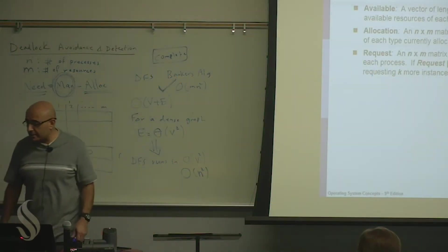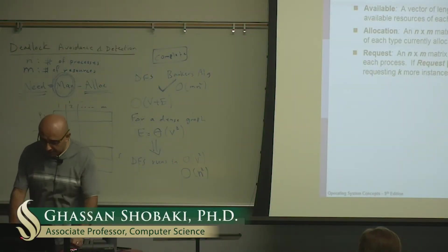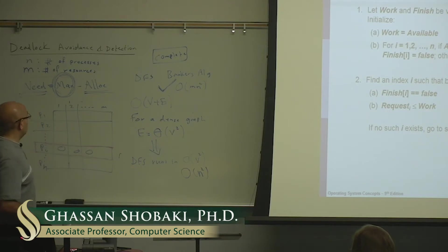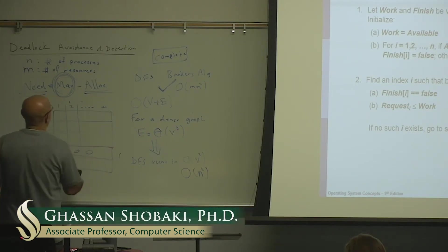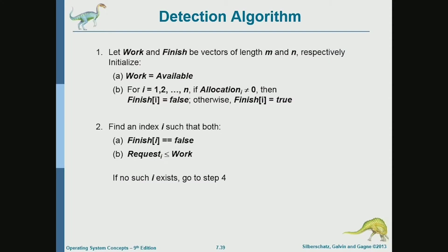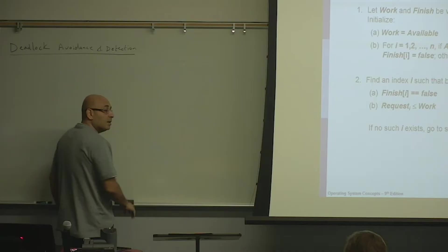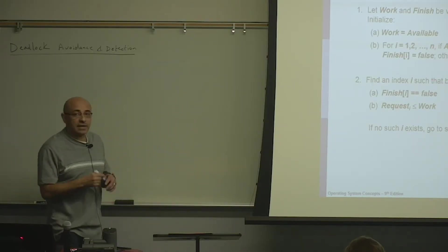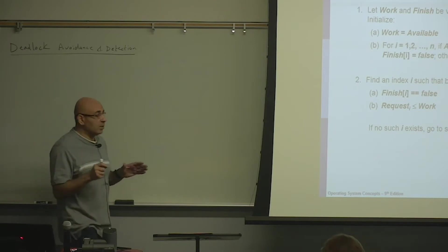If we have multiple instances of each resource, we run the detection version of the Banker's Algorithm. The detection version is slightly simpler in the sense that you don't have to argue about or account for the future. All what you analyze is the present. So the detection algorithm is all about the present.